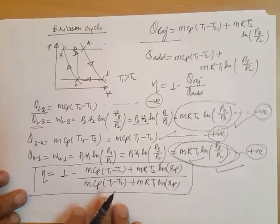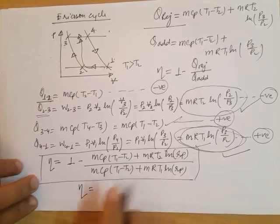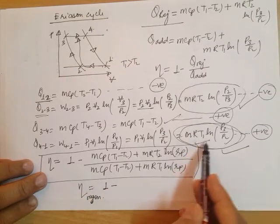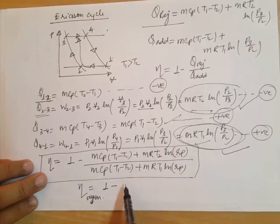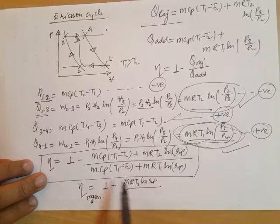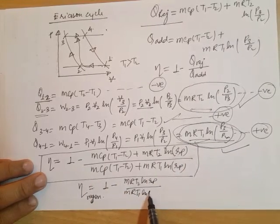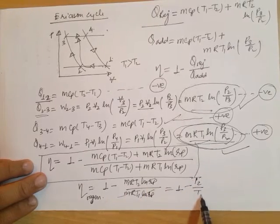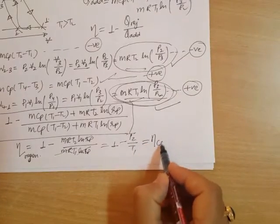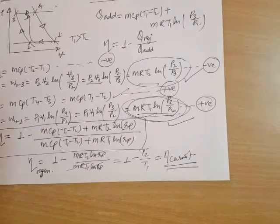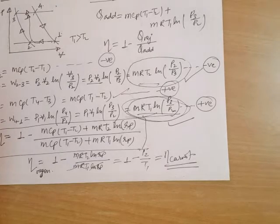For the regenerative Ericsson cycle, heat rejection becomes mRT2·log(RP) and heat addition becomes mRT1·log(RP). The log(RP) terms cancel, and efficiency simplifies to 1 - T2/T1, which is nothing but the Carnot cycle efficiency.